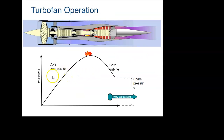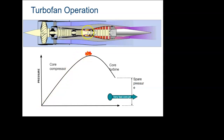Here's another view showing the fan, compressor, and combustor cans or burners. You can see the pressure going up all the way — compressed until it hits the burner — then it expands through the turbines, leaving a little extra pressure at the exit, which is important.